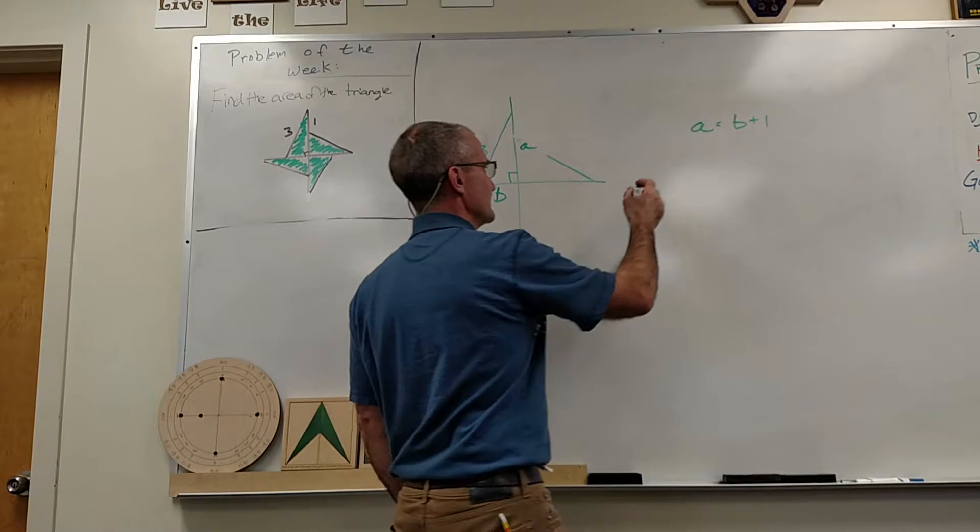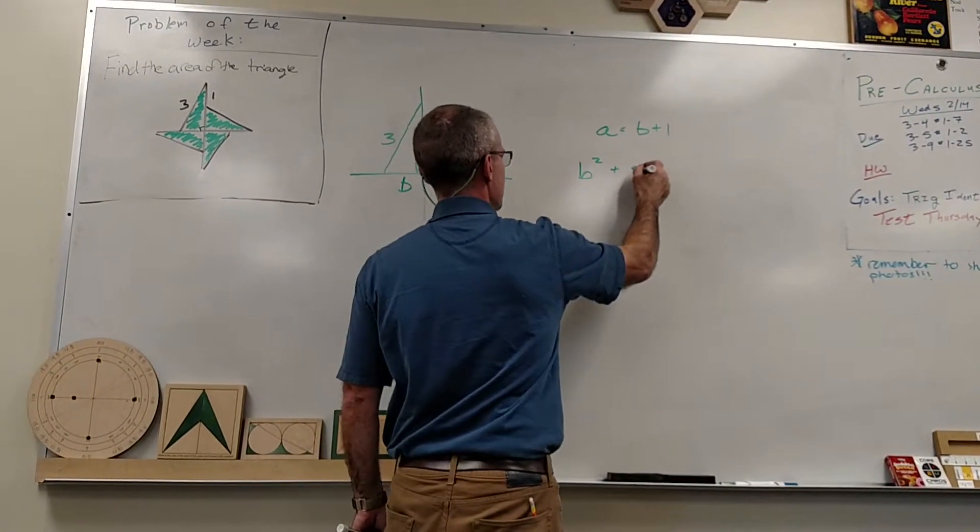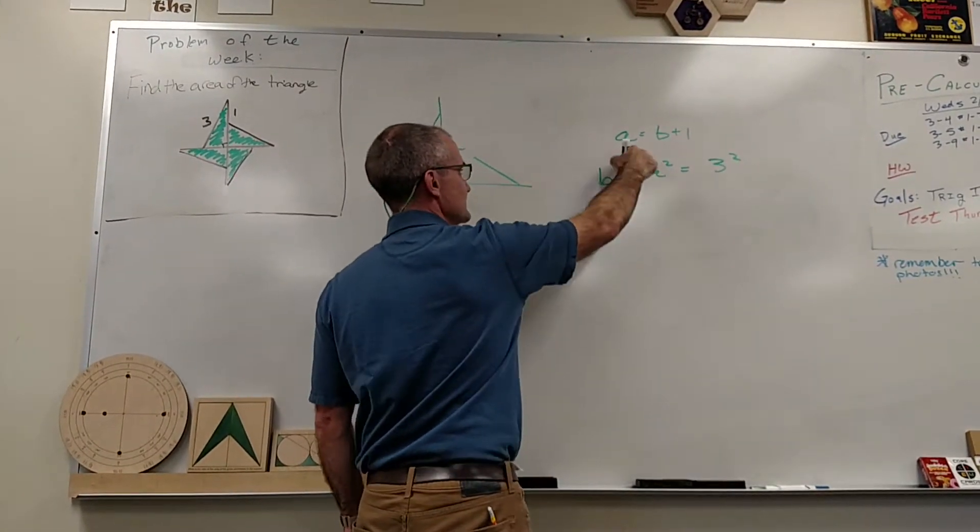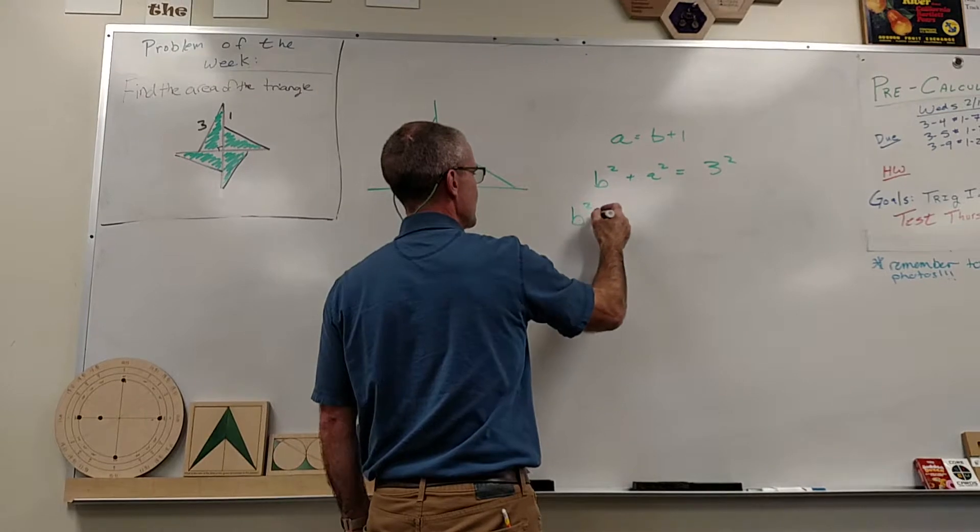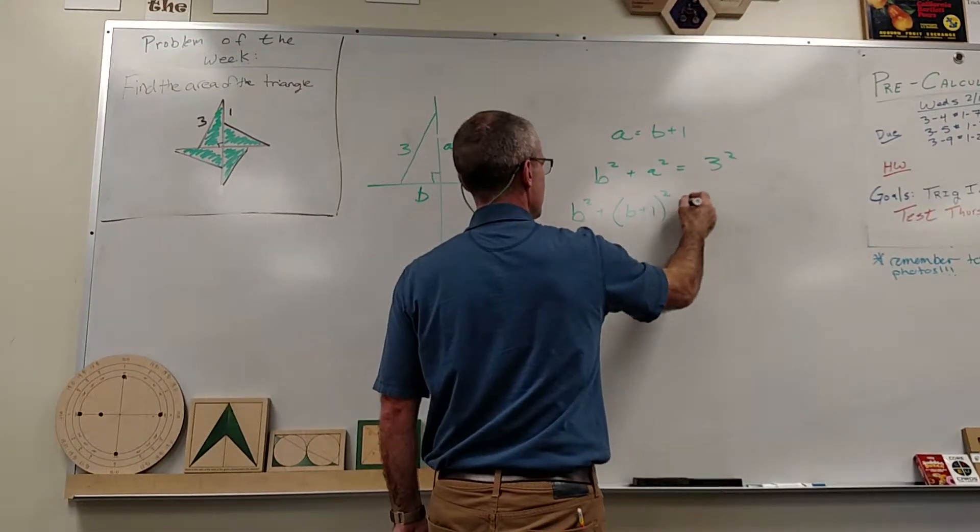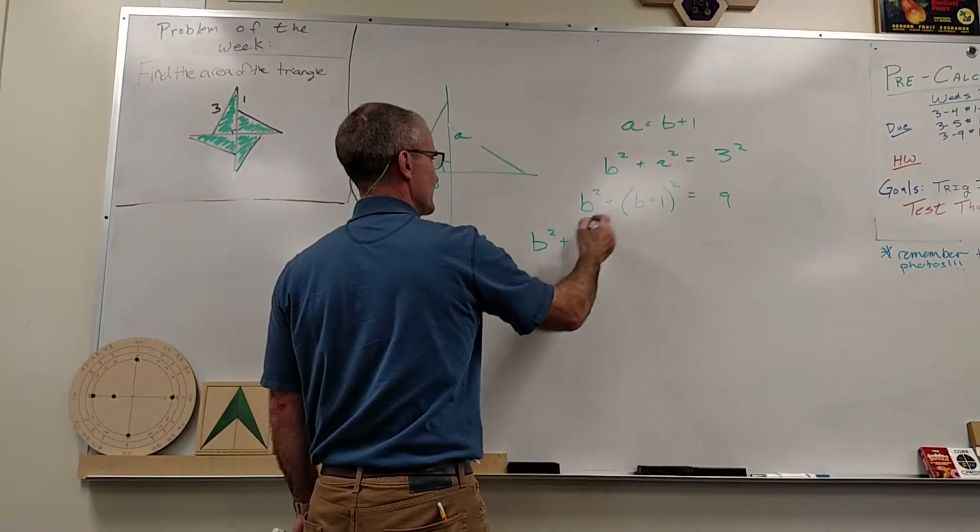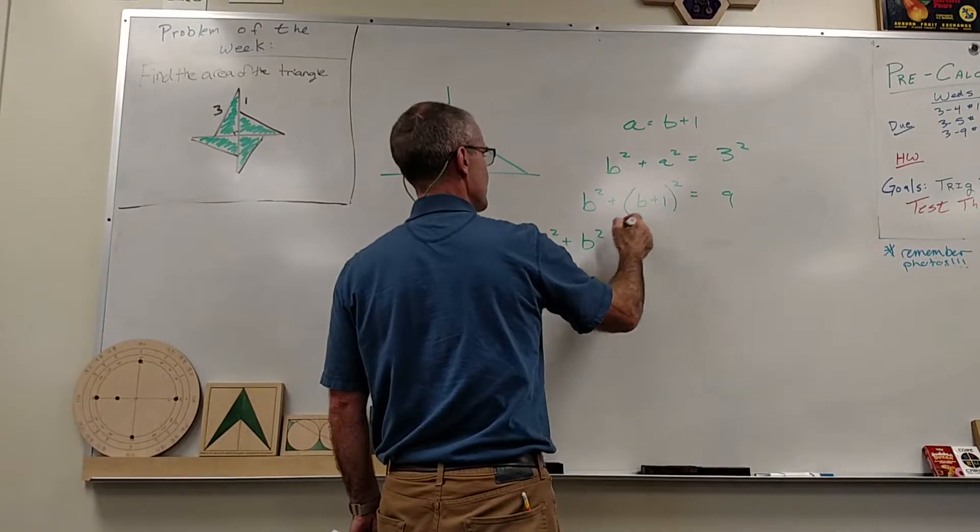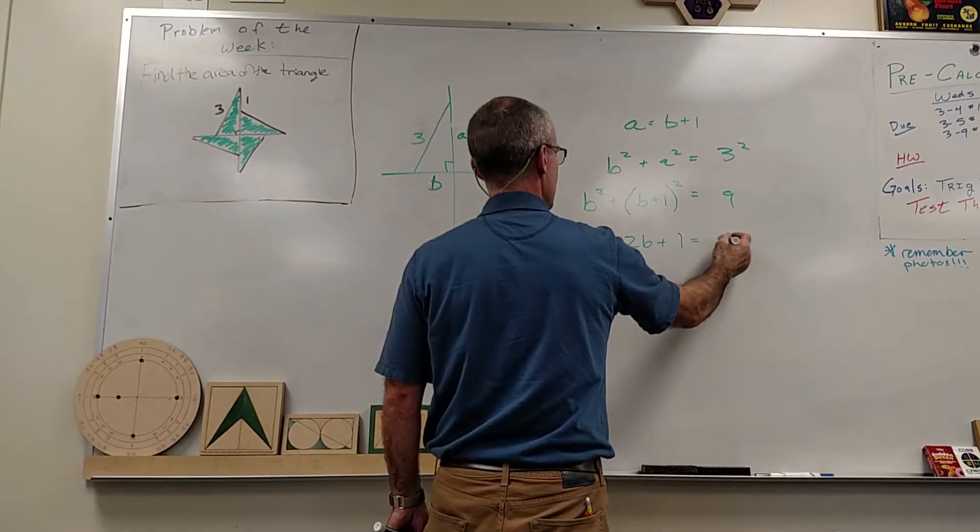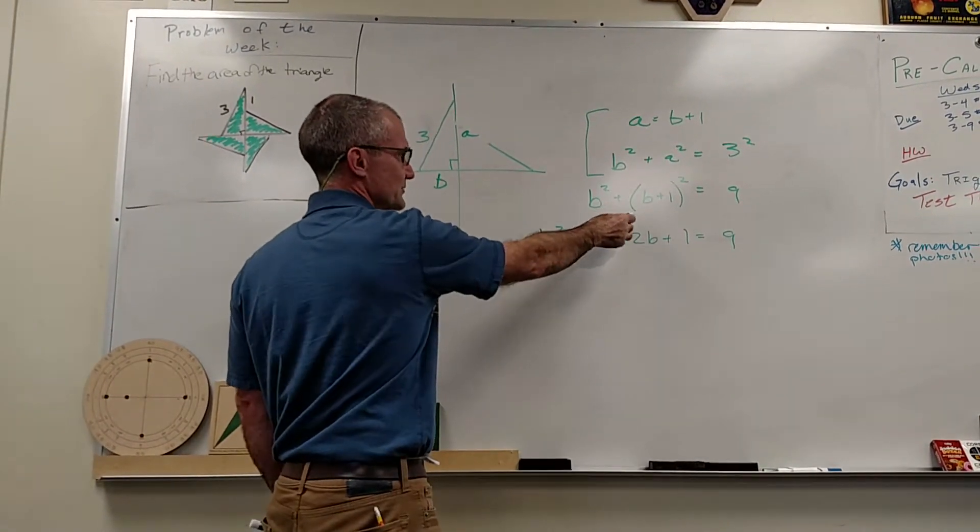And then with the Pythagorean theorem, I have B squared plus A squared equals three squared. But then I know A is equal to that. So I have B squared plus A squared, B plus one quantity squared equals nine. I have to FOIL that out. So I have B squared plus B squared plus 2B plus one equals nine. I write two variables. I have to have two equations. I combine them through substitution.